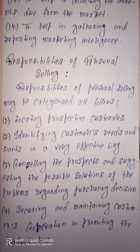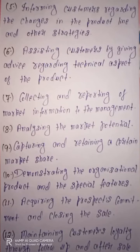Next one is securing and maintaining customers' cooperation in promoting the product line. Yani ki, company ke jo product line hai, usko promote karne ke reference me, customers ke cooperation ko secure karna aur use properly maintain karna — ye bhi inki responsibility area me count kiya jata hai. Next responsibility is informing customers regarding the changes in the product line and other strategies. Yani ki, agar company ke product line me ya uski strategy me kisi bhi tarike ka koi bhi change ho raha hai, toh in changes ke regarding apne customers ko proper information available karana — ye bhi inki responsibility area me count kiya jata hai.